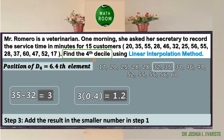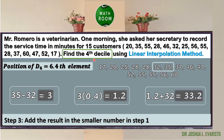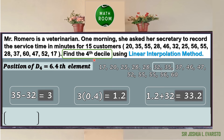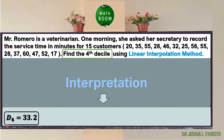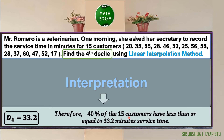Step 3: add the result to the smaller number — 1.2 + 32 = 33.2. Hence, using the linear interpolation method, D sub 4 = 33.2. D sub 4 means 40% of the distribution. Therefore, 40% of the 15 customers have a service time less than or equal to 33.2 minutes.